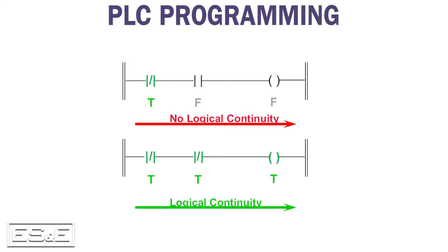So how do the input conditions solve to be true or false? Let's start by moving through the top rung, starting with the first input condition. That condition is true, so we move to the second input condition. That condition is false, so the result of the two conditions are false. There is no logical continuity, so the output is off. With the second rung, both input conditions are true. We have logical continuity, so the result is true and the output will be on.